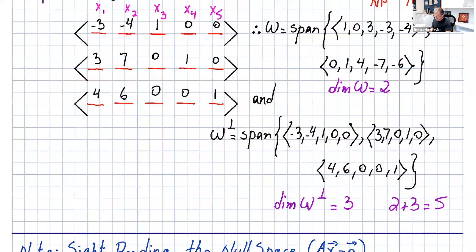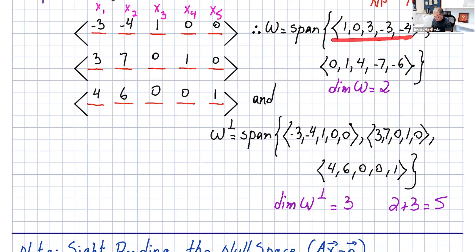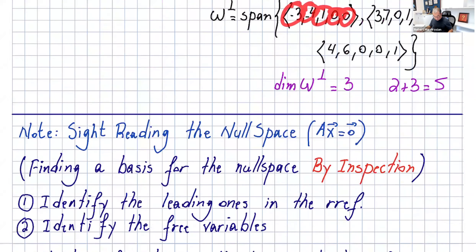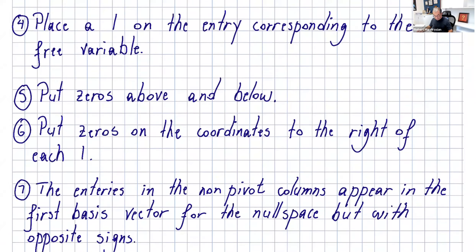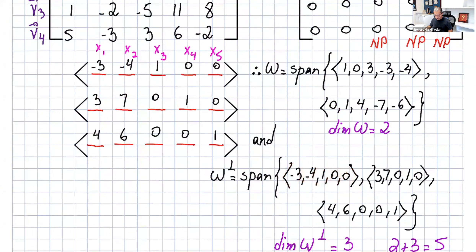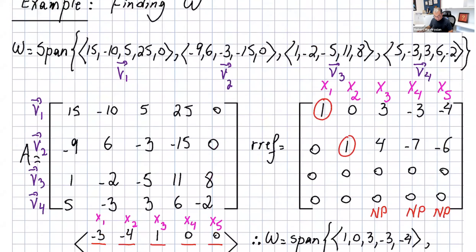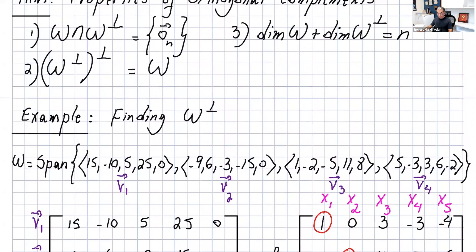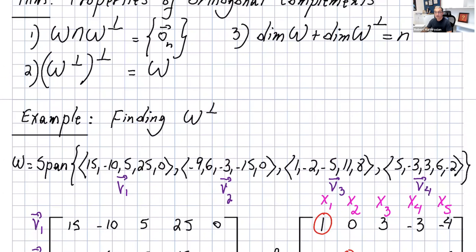Let's check the dimension: the dimension of w-perp is three, the dimension of w is two, and adding them gives five — matching the five components of each vector in R5. That's it for this lecture. Please watch it a couple of times, then you can start finding orthogonal complements on your own. Thank you for watching, and I'll see you in the next video.